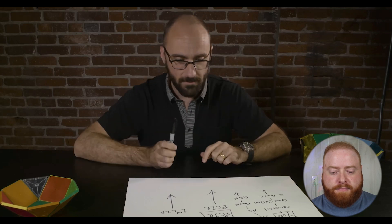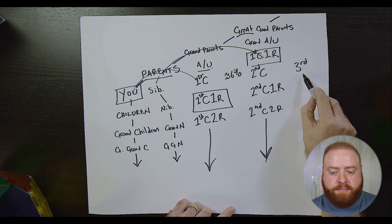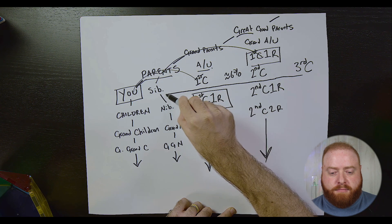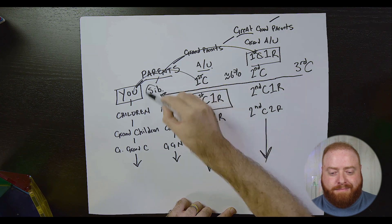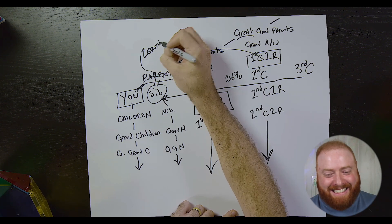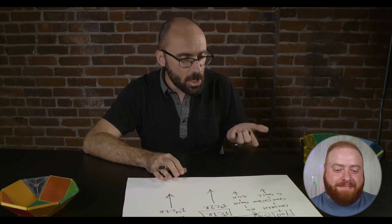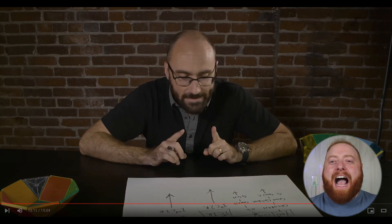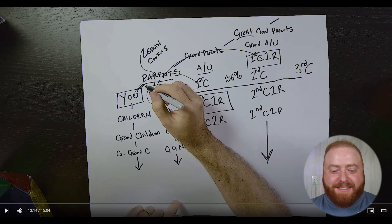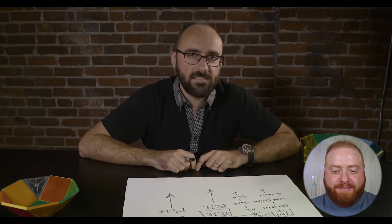CGP Grey also makes the funny observation that if we continue the pattern of third cousins, second cousins, first cousins, our siblings — you could argue for zeroth cousins! And I find that pretty good. But then — I love the horror music in the background — somewhat in jest, he says that might make you your own negative first cousin.